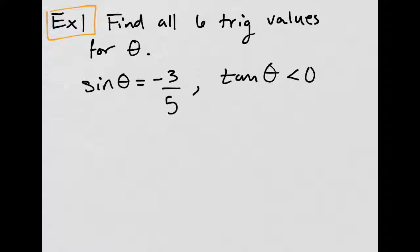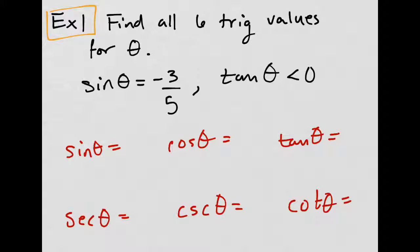In this example, it says to find all six trig values. What does that mean? That means we have to find sine of theta, cosine of theta - all of these. So that's what the question is talking about: find all six trig values for theta.